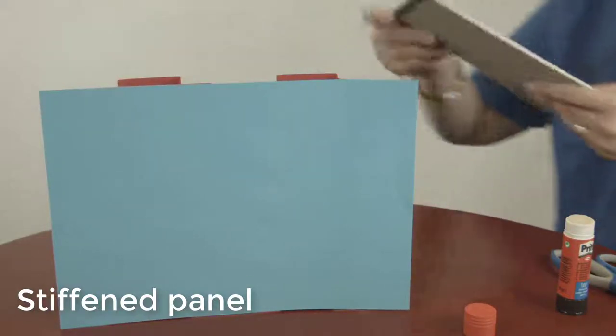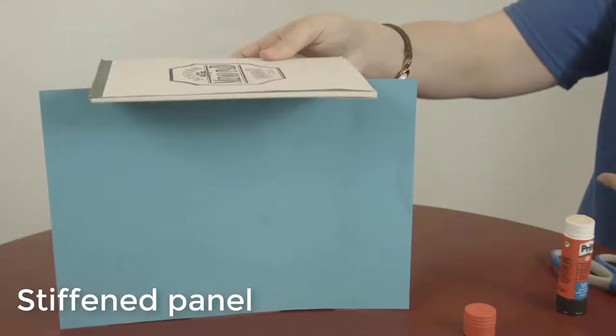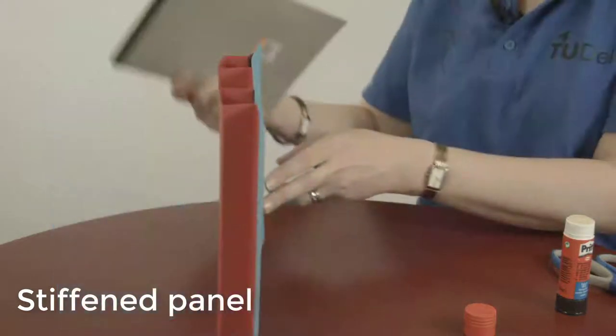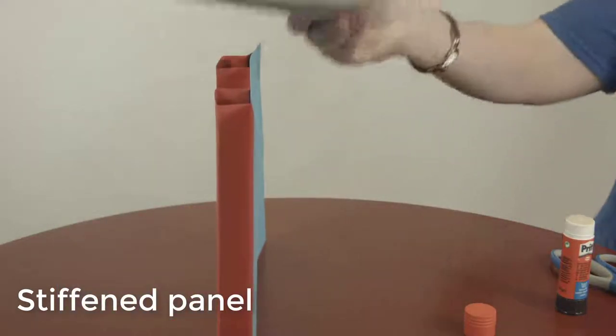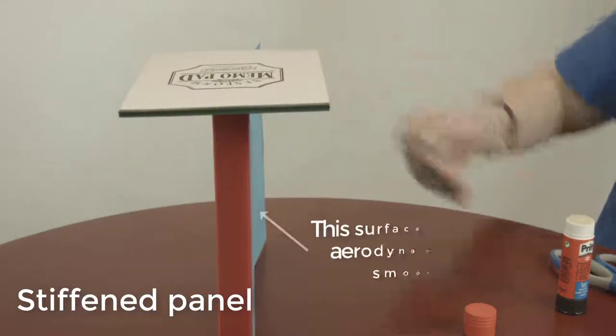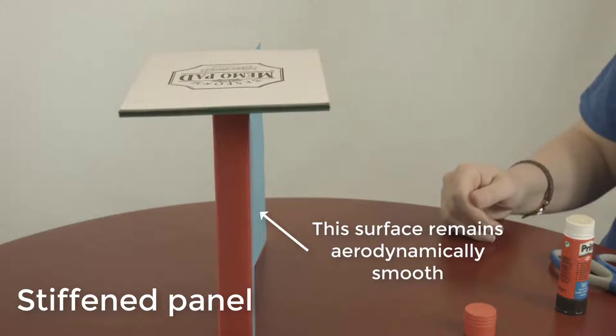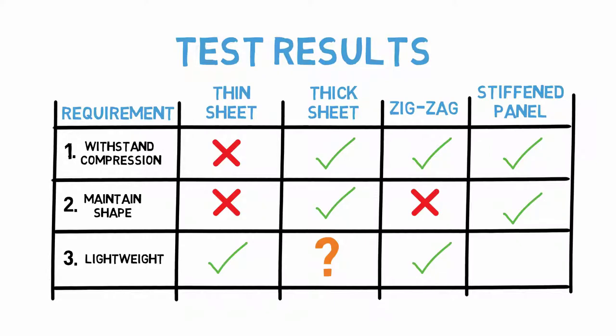Now let's evaluate our design. It meets the first requirement that it withstands compression. It also meets the second requirement because it does hold its shape, and if the stiffeners are placed on the inside of the structure, the outer surface remains smooth. And finally, it is a lightweight solution. There are only enough stiffeners to take the load. It is certainly lighter than both the thicker cardboard and zigzag folded options.